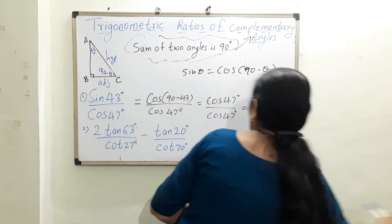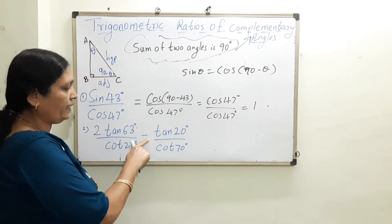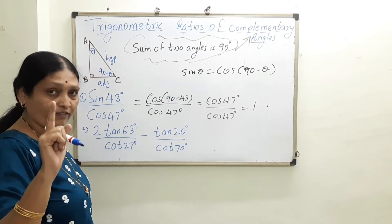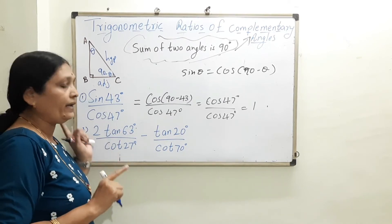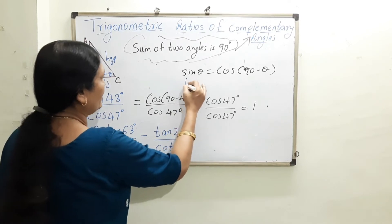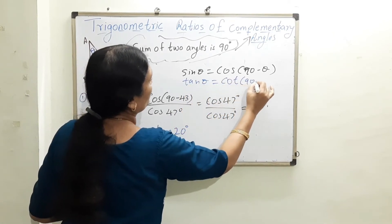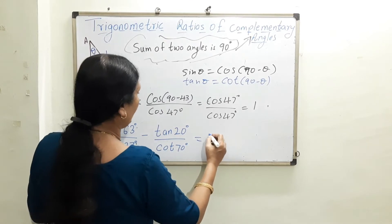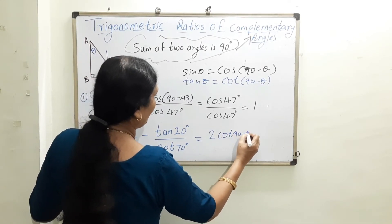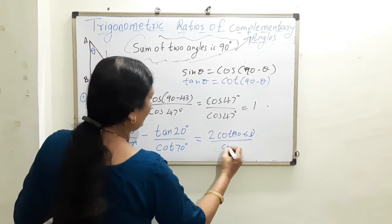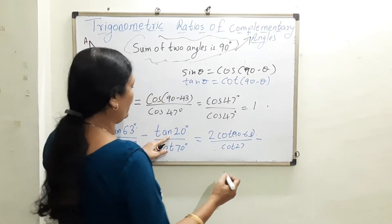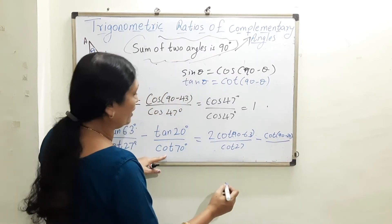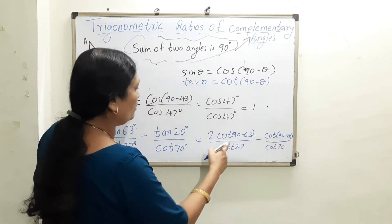Let's take one more question: 2 tan 63 over cot 27 minus tan 20 over cot 70. Remember, the angles will always be complements of each other, summing to 90 degrees. You can change any one of them. Using tan θ = cot(90 − θ), I write tan 63 as cot(90 − 63) over cot 27, and tan 20 as cot(90 − 20) over cot 70, keeping the cot terms as they are.